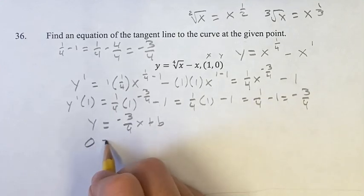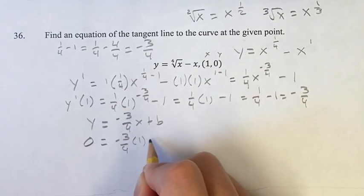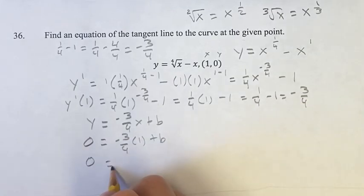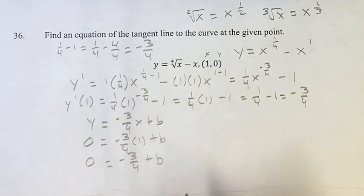We know y is zero. So, that is zero equals negative three-fourths. x is one plus b. So, zero equals negative three-fourths, since negative three-fourths times one is just itself. Plus b.